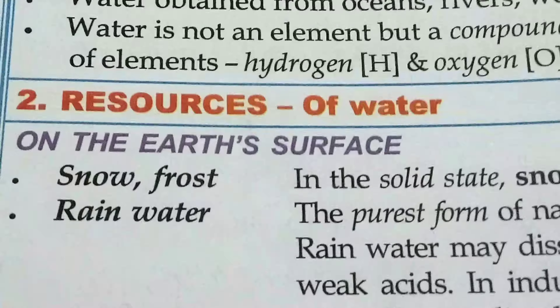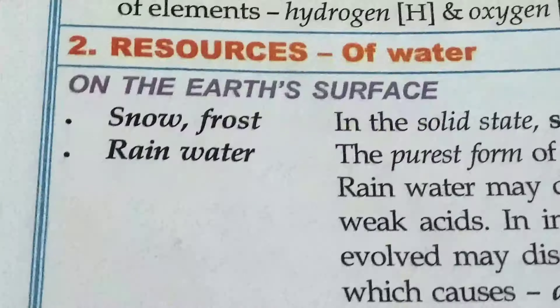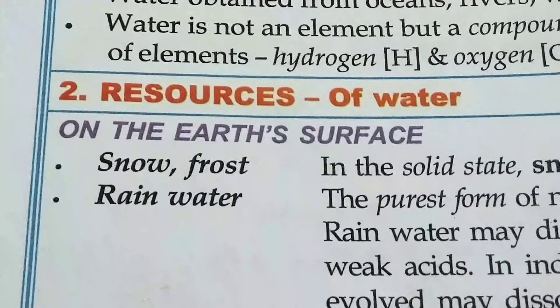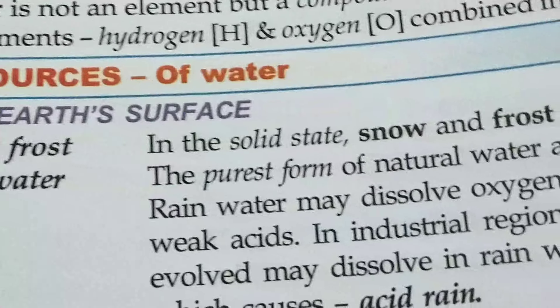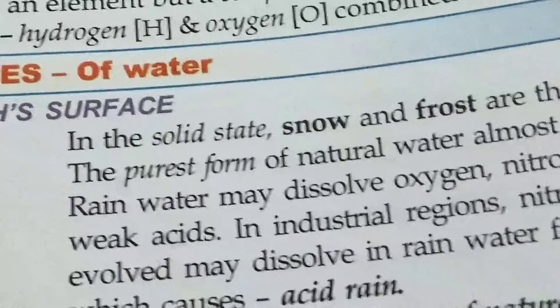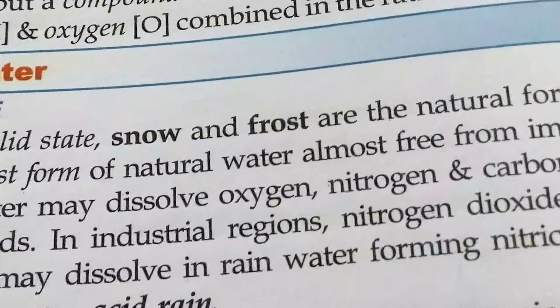Next, resources of water. On the Earth's surface, snow, frost, and rain are the common forms of water. In the solid state, snow and frost are the natural forms of water present.